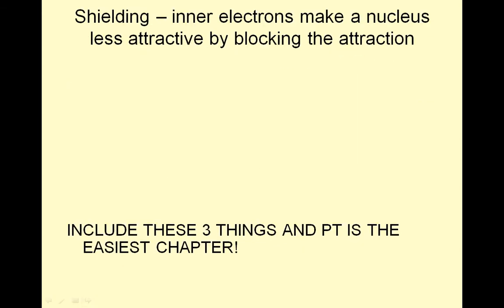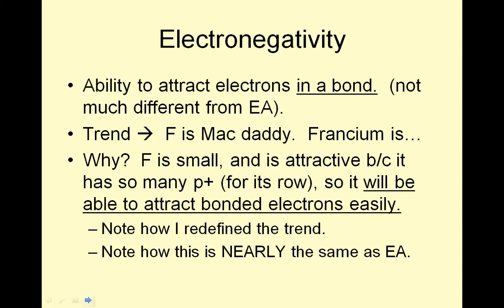Shielding: if I have a nucleus — it's positive — and I have shells of electrons, and I'm an electron out here, I'm attracted to this nucleus, but these inner electrons block it. So shielding blocks the attraction; the inner layer of electrons blocks the attraction for the nucleus. Include these three things and the periodic table is the easiest chapter.